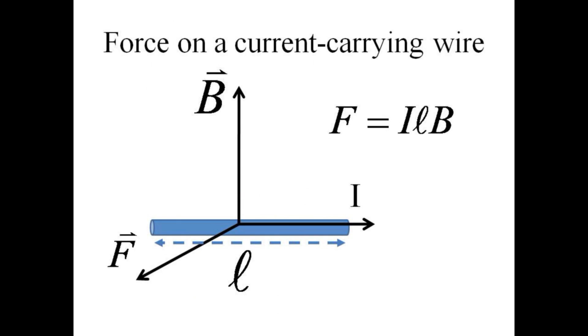If a collection of charges is traveling down a wire of length l, with a current i at right angles to a magnetic field, the same magnetic force becomes i times l times B. The direction of the force is still obtained from the right-hand rule, with the thumb pointing in the direction of travel of the current i.